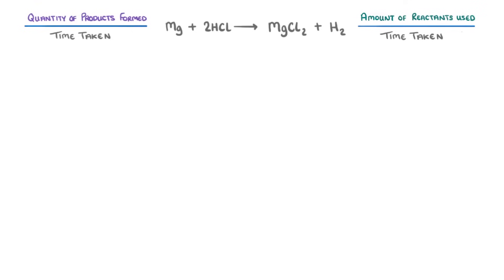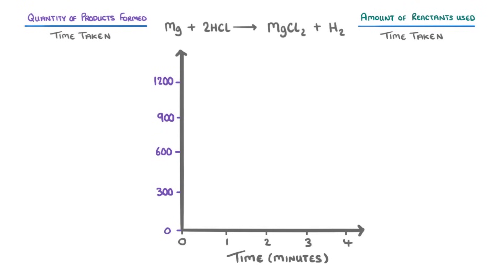If we had a way to monitor how much gas was being released during the reaction though, then we could plot it on a graph and see how the rate of reaction changes during the reaction. On the x-axis we'd have time, and on the y-axis we'd have the volume of hydrogen produced.